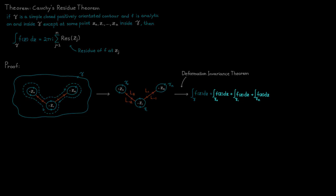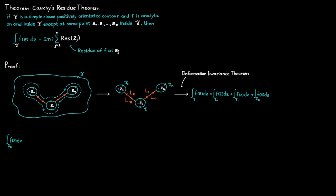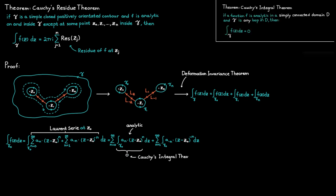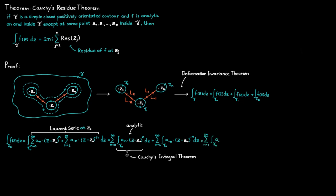The next step is to take one of these integrals — the first one, for example — and determine it using the function's Laurent series expansion. If we rewrite the function f using the Laurent series expansion around the isolated singularity at C0, we can split this integral into two smaller ones: separating the analytic part and the principal part of the Laurent series. The integrand in the first integral is the analytic part, which is always analytic, so that integral is simply equal to zero by Cauchy's integral theorem.